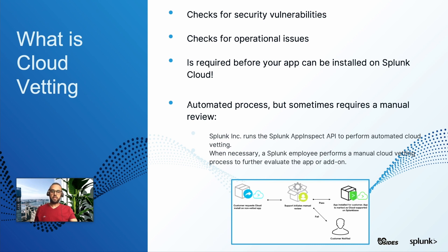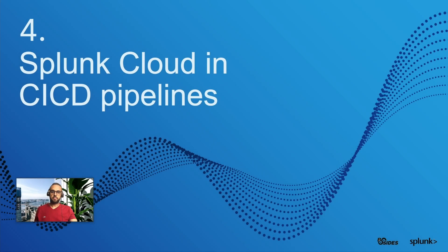This vetting process is automated but in some cases it requires a manual check. Now that we have reviewed the basics — Splunk app definition and structure, available tools for automation, and the Splunk Cloud validation process for private applications — let me present the architecture I defined and implemented to have Splunk Cloud working with a CI/CD pipeline.